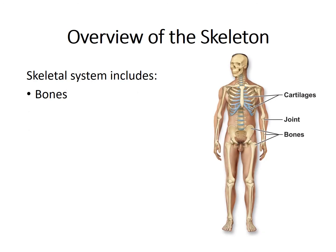First, let's make sure you are clear on what comprises the skeletal system. The skeletal system, of course, includes bones. Those bones fit together or are joined at joints or articulations. Articulations allow for movement and they connect one bone to another. Ligaments are fibrous structures that attach one bone to another bone at a joint, not to be confused with tendons, which attach muscles to bone, although the structures are very similar.